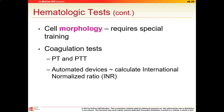Another test we can do is cell morphology — 'ology' meaning the study of, and 'morph' meaning shape. When dealing with disease processes like anemia, you can actually look underneath the microscope and the shape of the red blood cells can give you information. Sometimes the size of the cell is smaller than normal, which is called microcytic. Other times the color is a little more pale than normal, which is called hypochromic. Certain morphology is associated with certain disease processes.